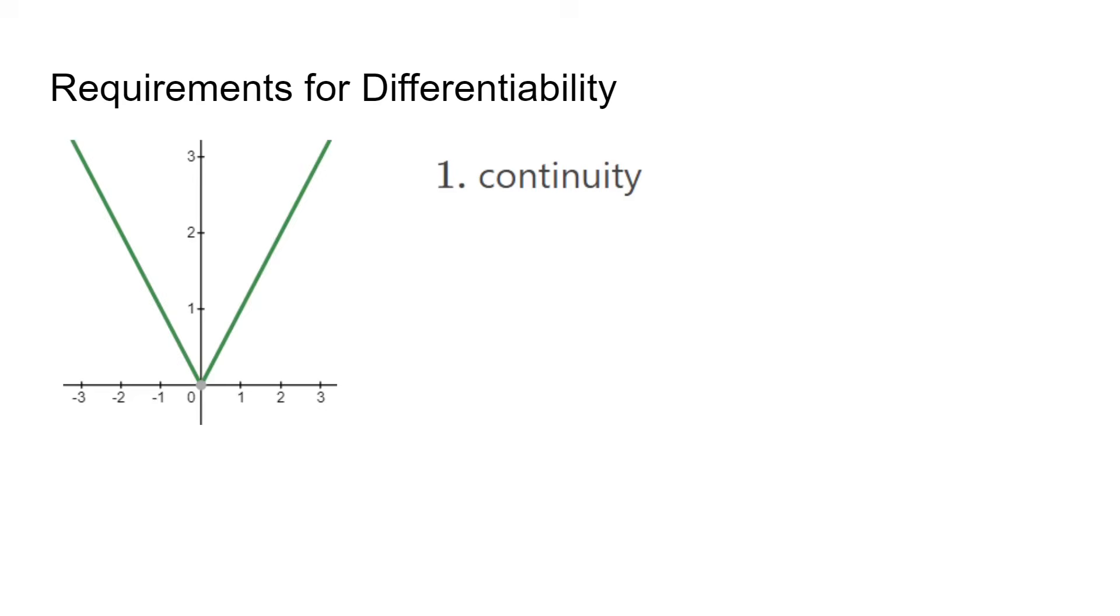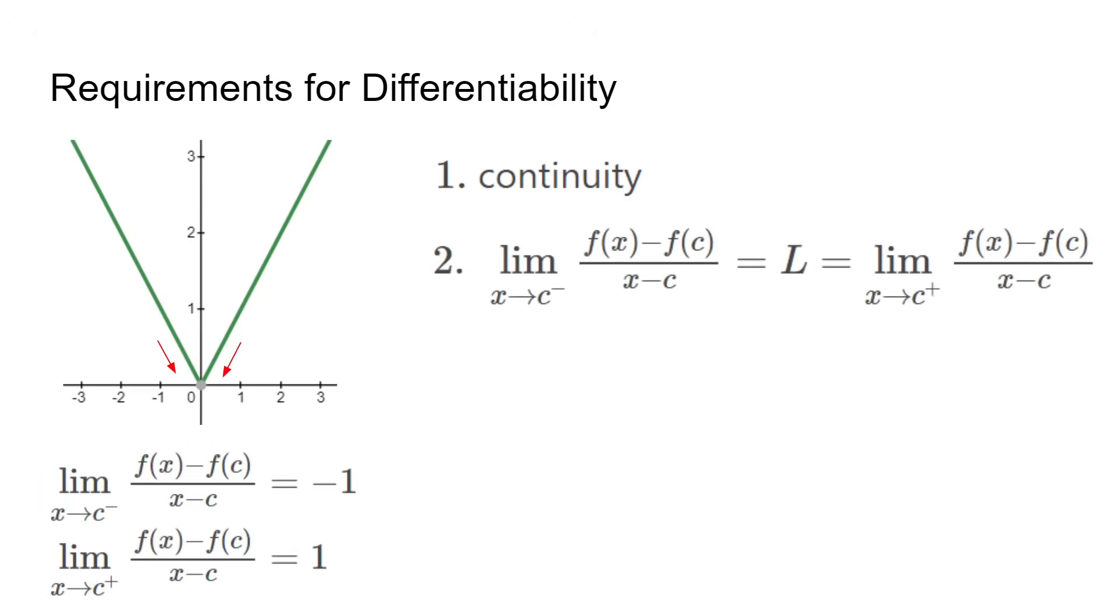In this absolute value function, the slope from the left is negative 1, but the slope on the right is 1. Since there is a sudden sharp turn, it is not differentiable. This can be summed up in this statement.